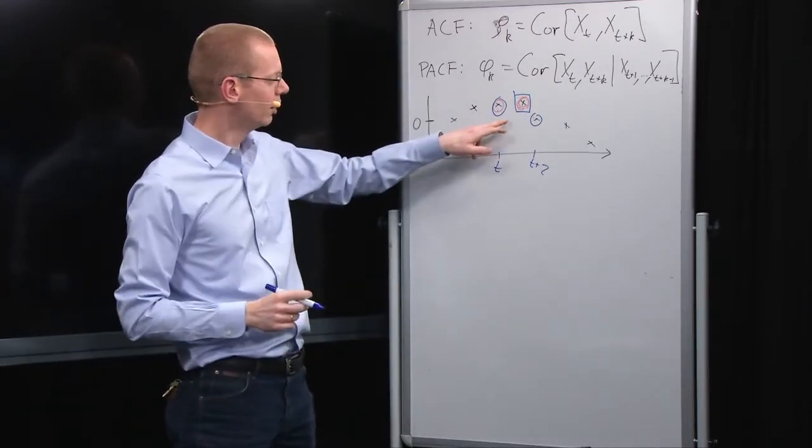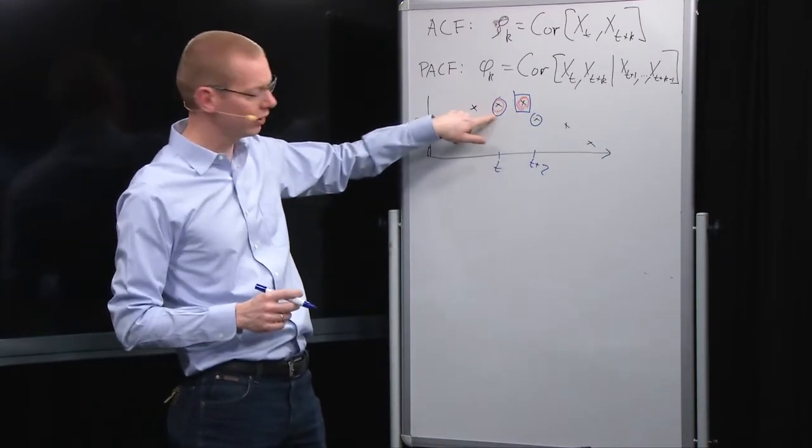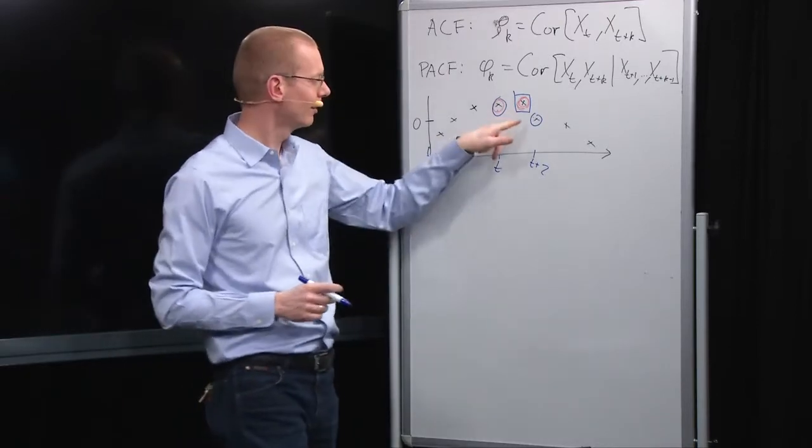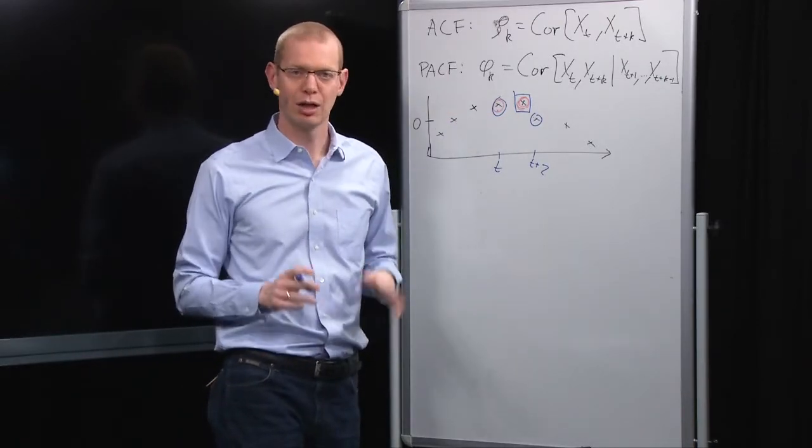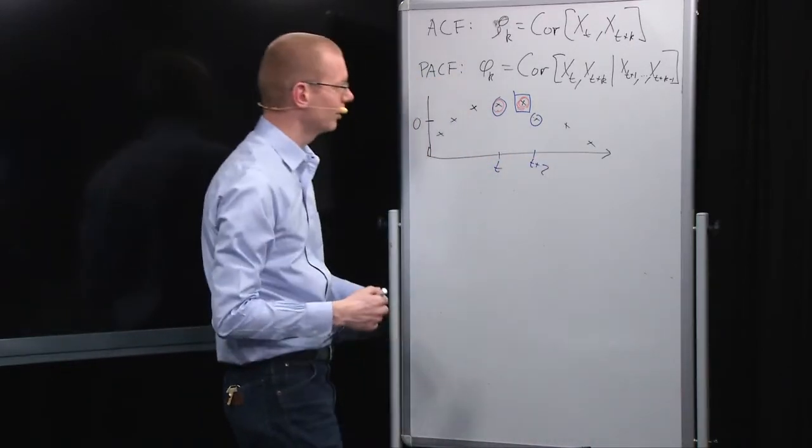Now the question is what is the model? Now if there's no dependence on the one that is two steps backwards but it only depends on the one that's one step back, there's no information left. Let's go through an equation and see how that works out.